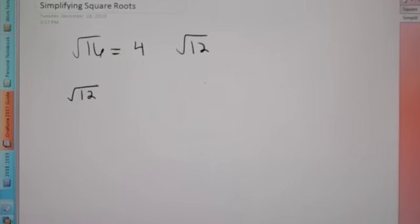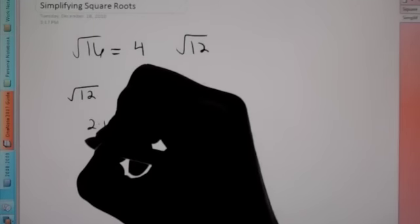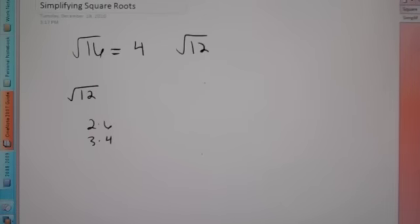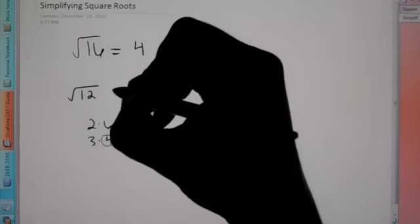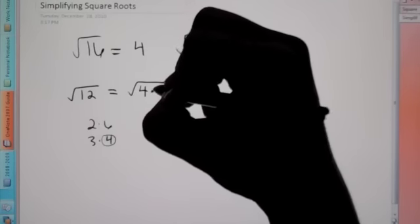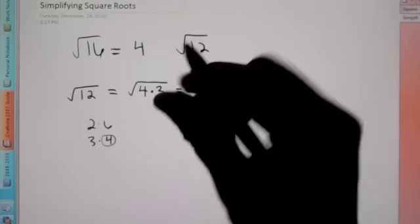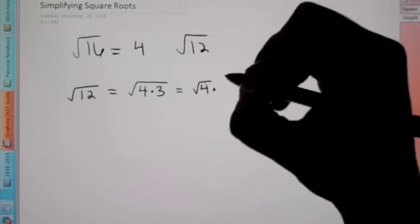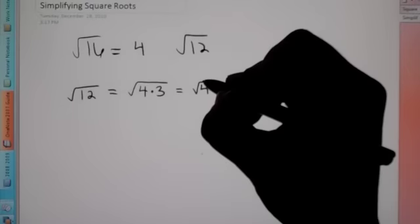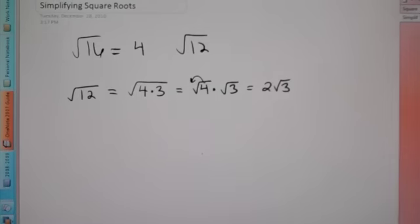To simplify √12, I'm going to break it into factors: 2×6 and 3×4. I want to find a factor that is a perfect square — I can take the square root of 4 and get a whole number. So I rewrite it as √(4×3), which equals √4 × √3. Taking the square root of 4 gives 2, and what remains inside is √3. So √12 simplifies to 2√3.